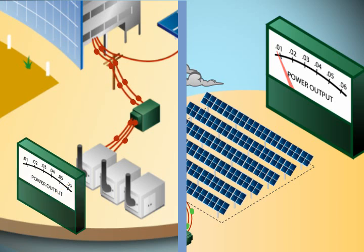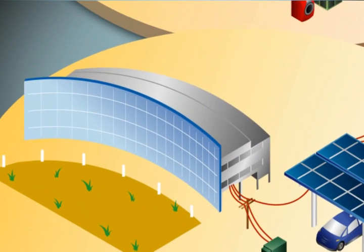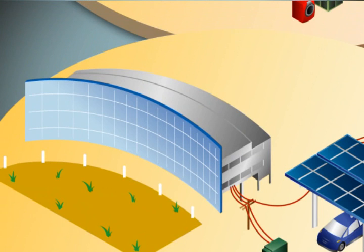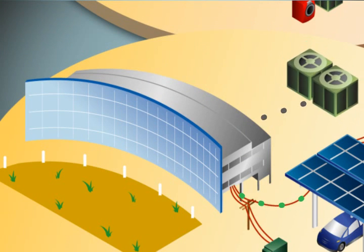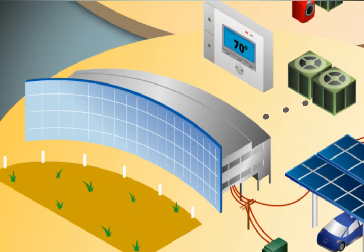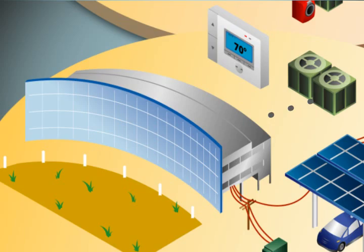Another solution is to have the building itself react to the changes in PV generation output. As an example, the fans on air conditioning systems can slow down, using less energy as the electricity output of the PV system decreases because of cloud shading. This can be done with little or no perceived change in the comfort level within the building.